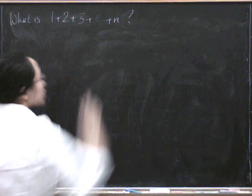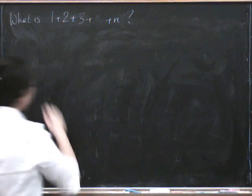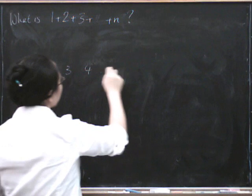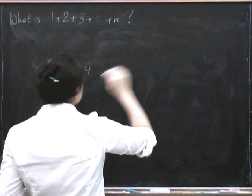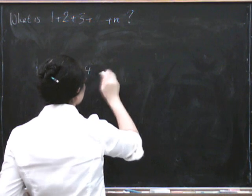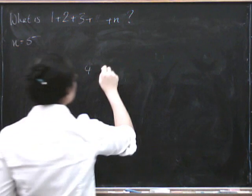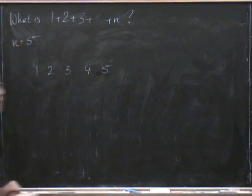So here, if we want to add up all these numbers, one sneaky way of doing it is you can imagine writing all the numbers in a row all the way up to n. Well, let's do n equals 5. So here's 1, 2, 3, 4, and 5, all the numbers we want to add up.